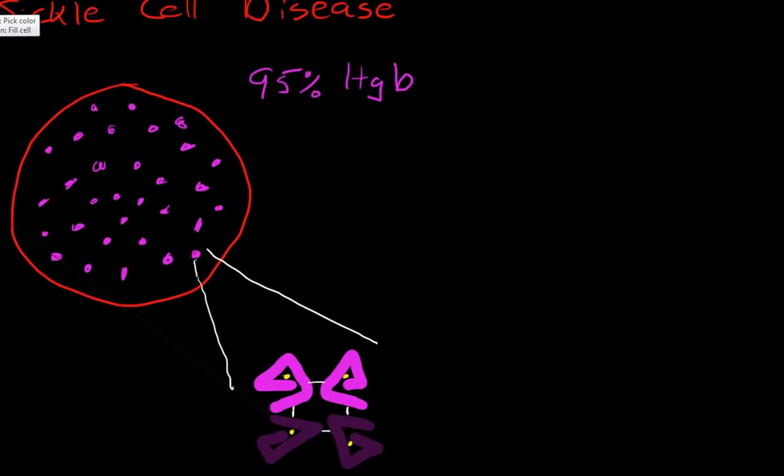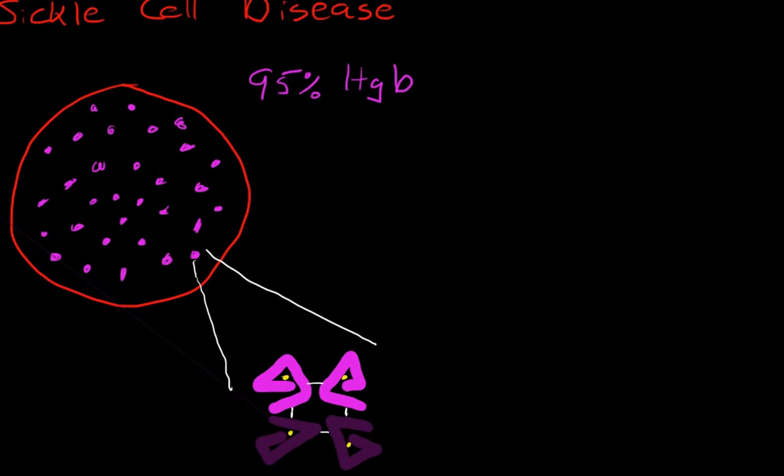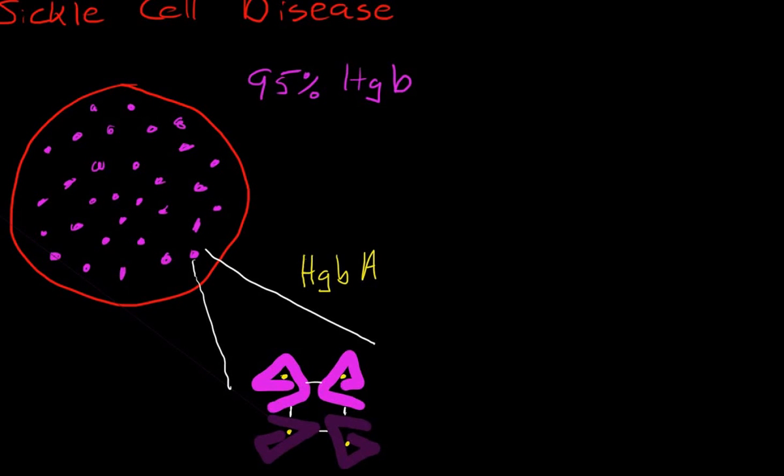There's actually several different types of hemoglobin in the body, but the main type that adults have is a hemoglobin called hemoglobin A, which stands for adult hemoglobin. 97% in a normal adult is hemoglobin A.